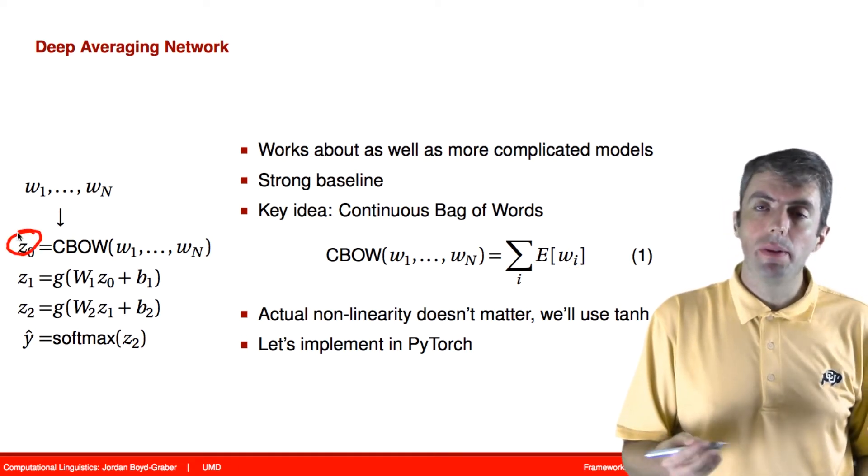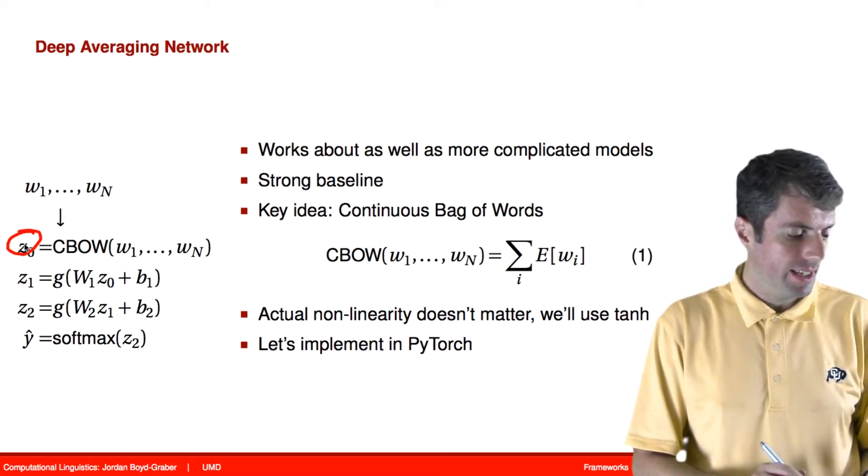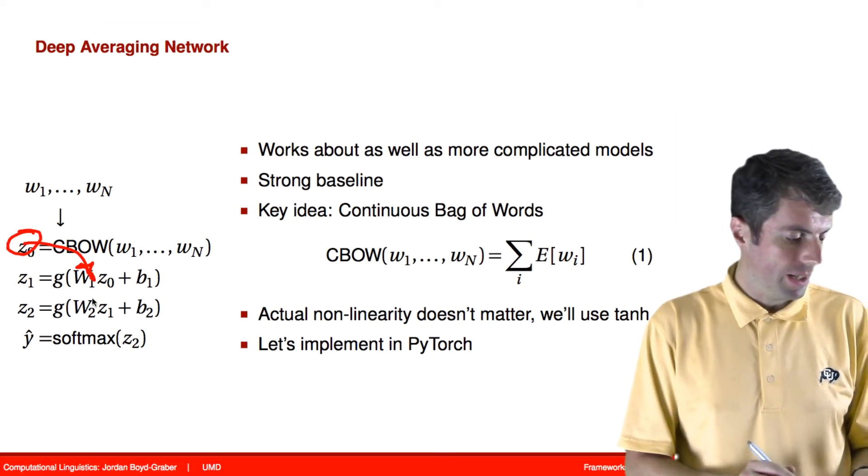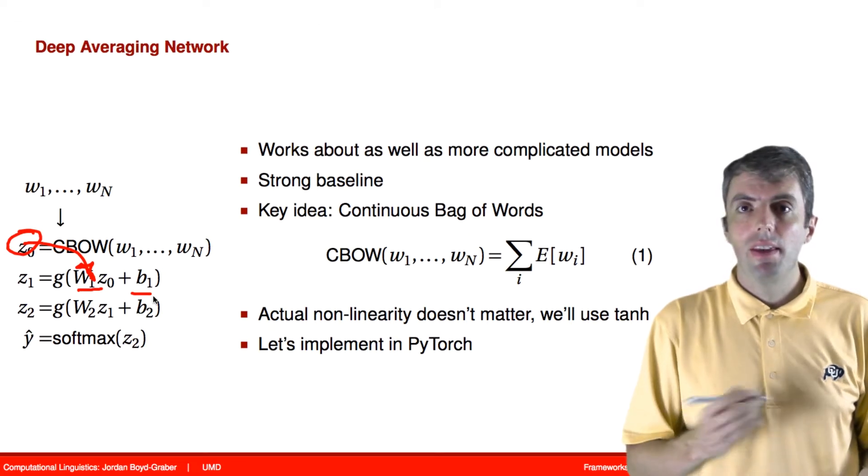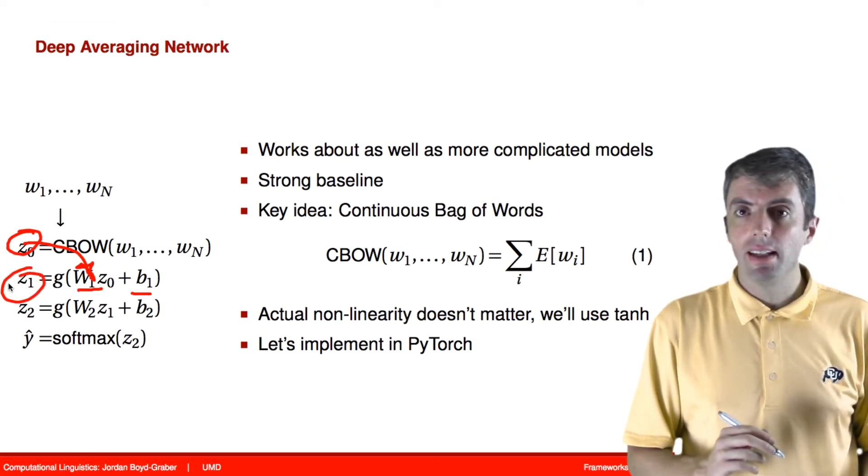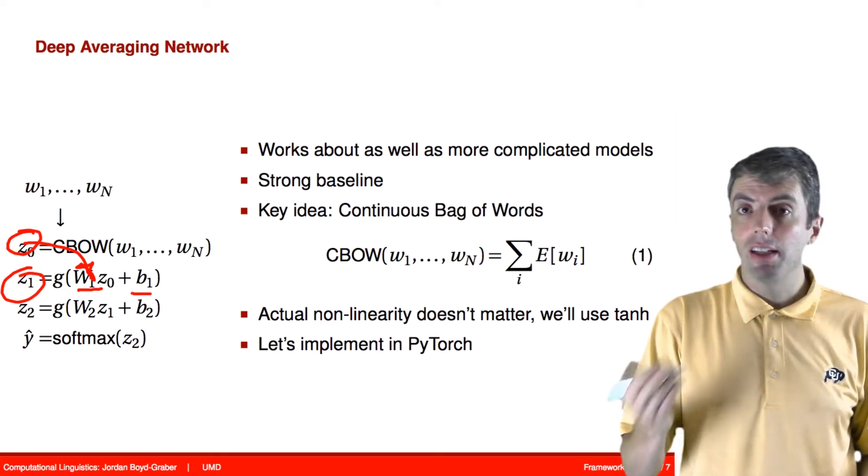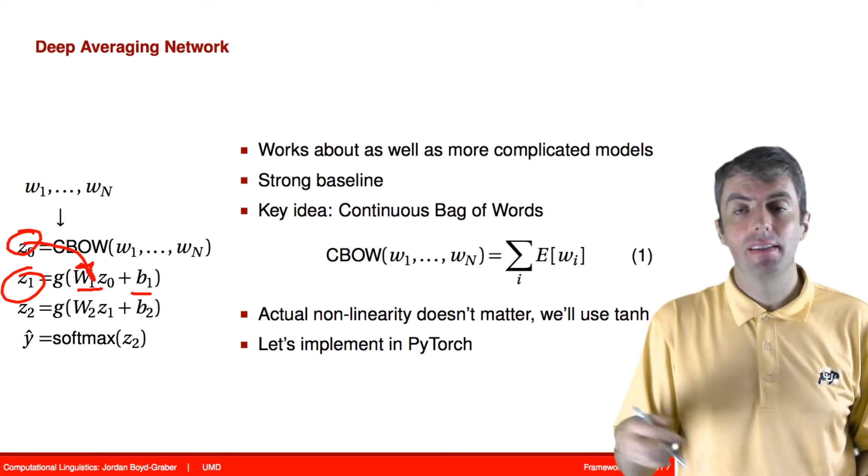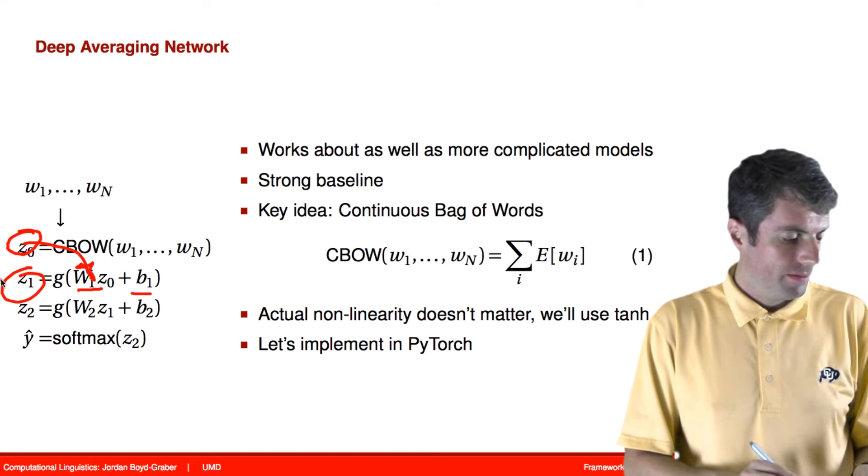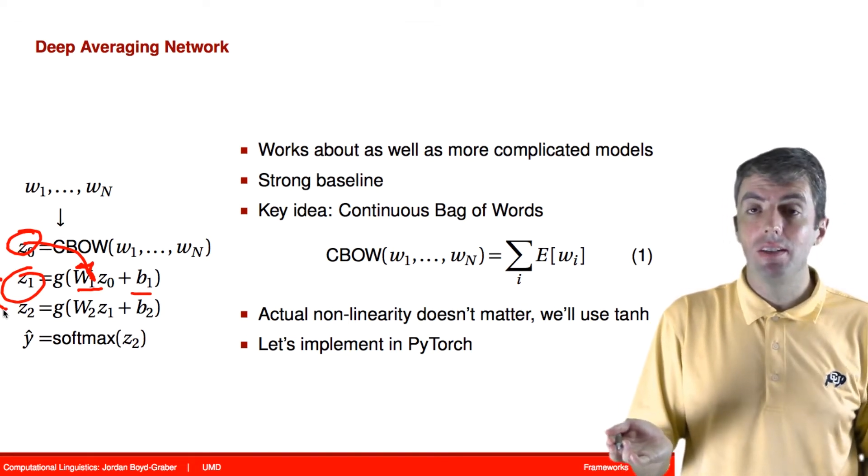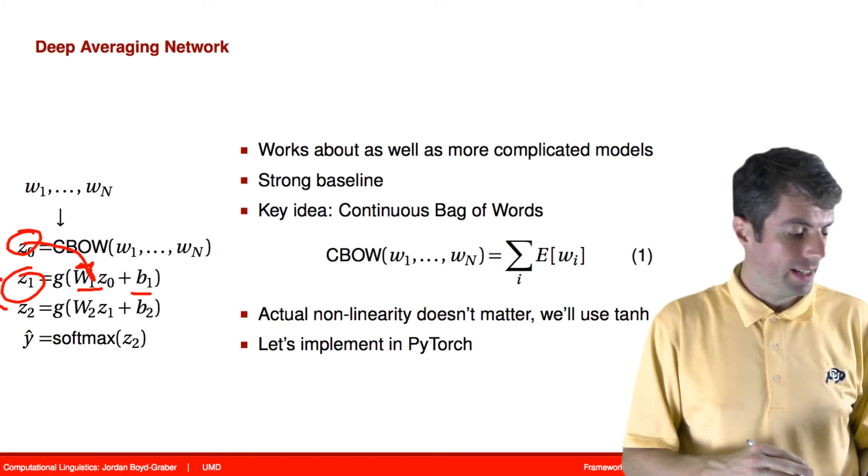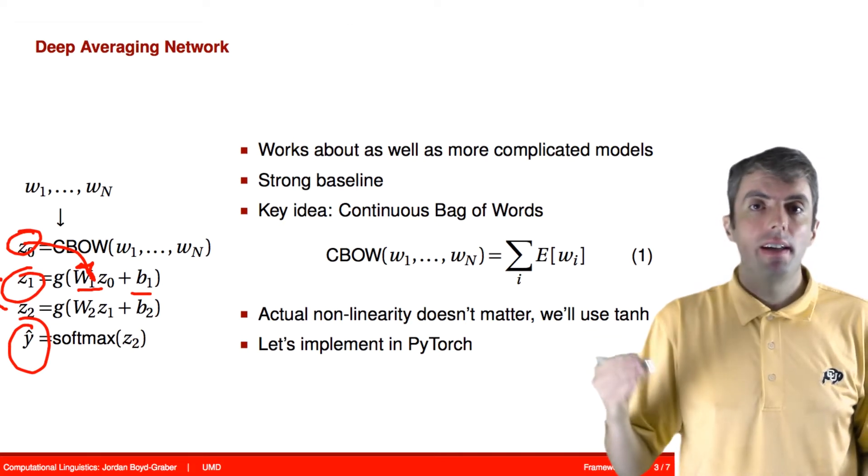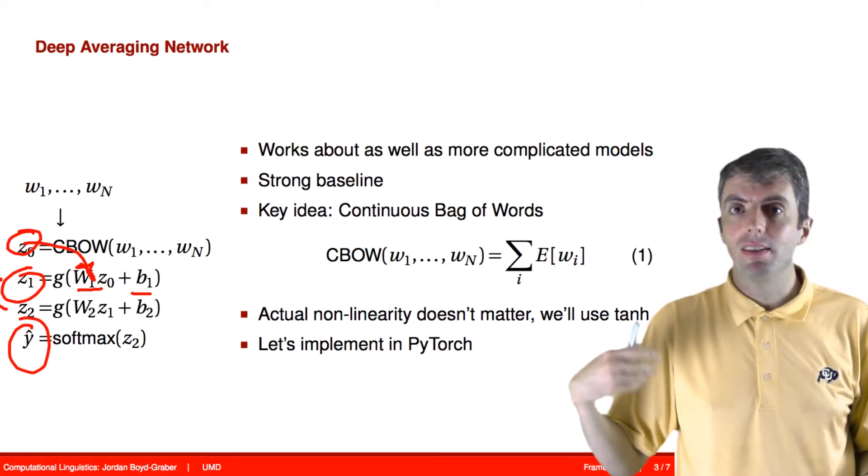What we're going to do with this representation of the document is apply a linear transformation to it, defined by these parameters w and b. Then we're going to pass that through a non-linearity element-wise. And if that's a good idea, let's do it again. This is why we call it a deep averaging network. It's deep because there are multiple layers of these non-linearities. In the example implementation, we'll only show you one non-linearity. Then finally, these non-linearities are put on top of just a simple average of the words.